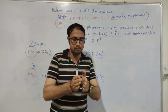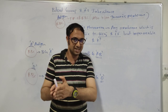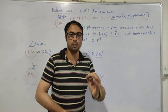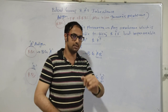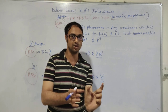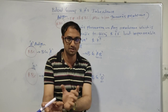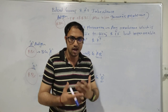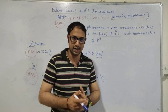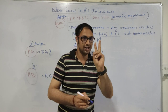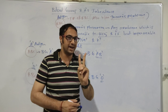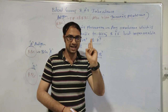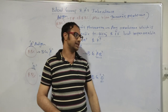Here, the antigen is made up of mucopolysaccharide. What is mucopolysaccharide? 'Muco' means amino acid, and 'polysaccharide' means sugar — so sugar plus amino acid is called mucopolysaccharide. There are two types of antigen in the ABO system: antigen A and antigen B.